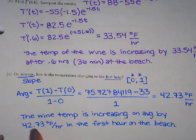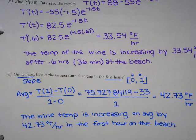The wine temp is increasing because it's positive, on average because we did the average rate of change, by 42.73 degrees per hour in that first hour on the beach. It's getting really hot. Moral of the story, if you're going to bring alcohol to the beach, be prepared to drink it fast, I guess.